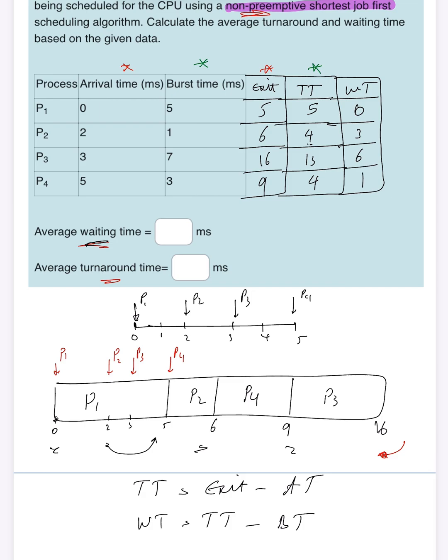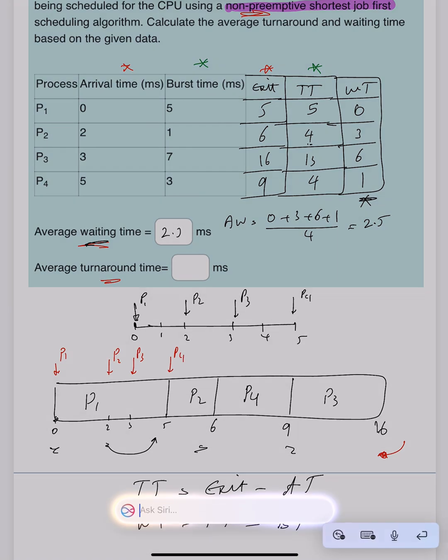The only thing we need to do is find the average waiting time. So average waiting time, easy, just find the average of this column, which is 0 plus 3 plus 6 plus 1 divided by 4, which is 2.5 milliseconds.